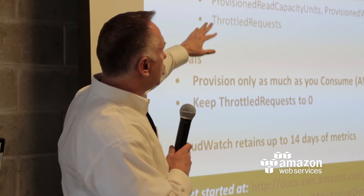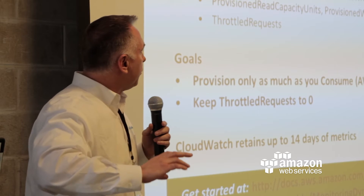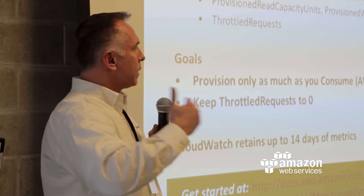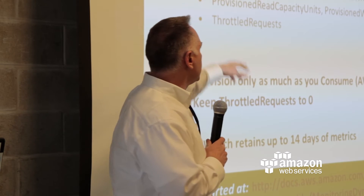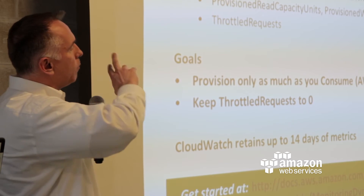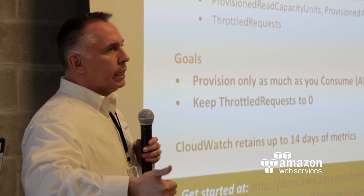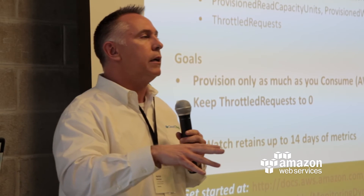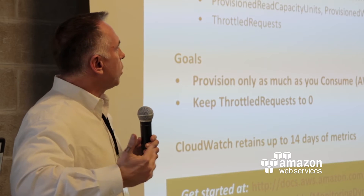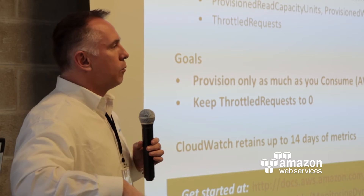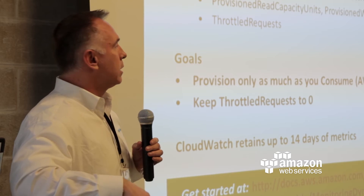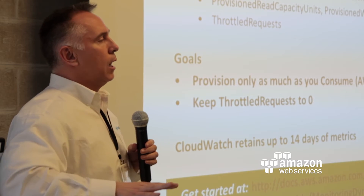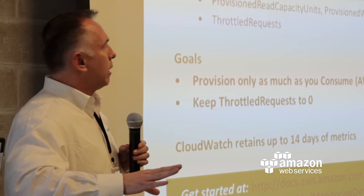CloudWatch pushes out the provisioned read and write capacity as well, so you can look at those two CloudWatch metrics next to each other and actually see how far off you are. The other CloudWatch metric is throttled requests — there are read and write throttle requests specifically. Throttle requests happen anytime you're calling and getting an error because you're trying to consume more than you provisioned. DynamoDB will allow you to burst a little bit, so this is very much an art, not a science, around how much to provision to match your consumed amount.